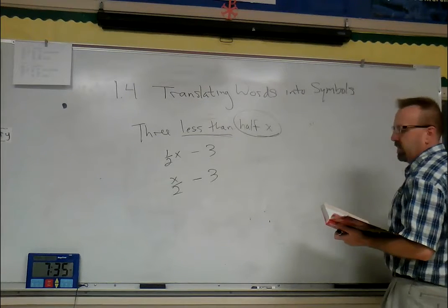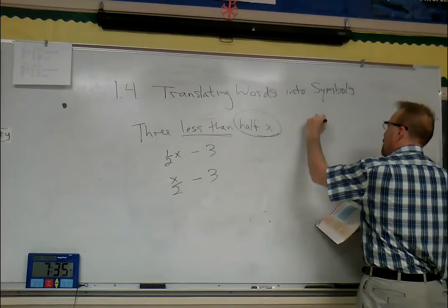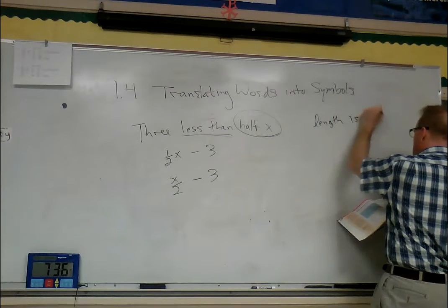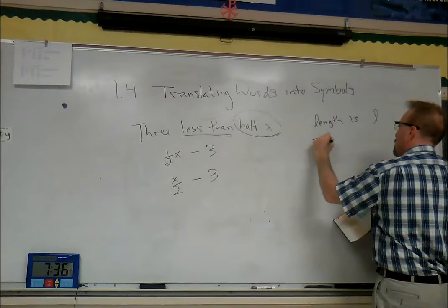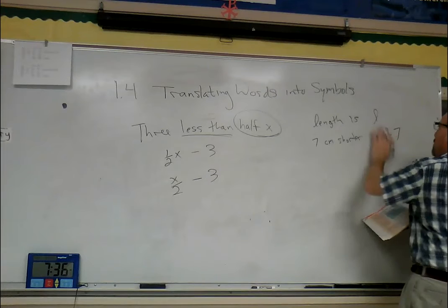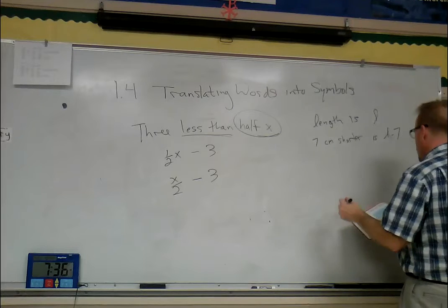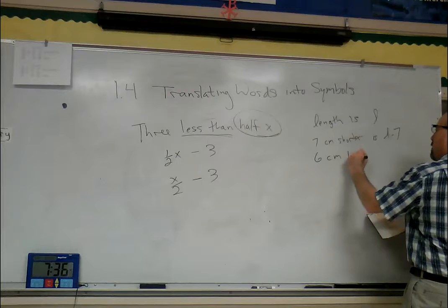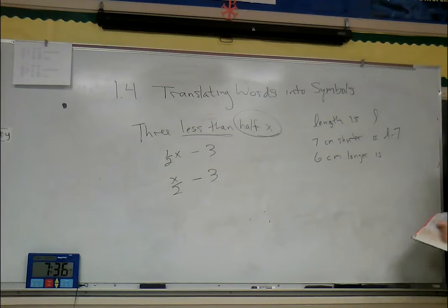Okay, example two. Let's read that one together. It says 'the length of a board is L', and 'the length of the board seven centimeters shorter' - that's L minus 7, because 'shorter' means it's less, so we take away seven. If it's six centimeters longer, how would we write it? It's longer, so we're going to have more, so we add: L plus 6.